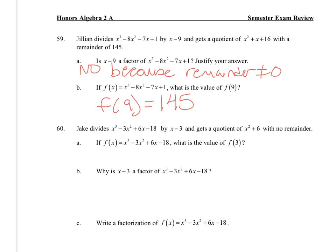Now Jake divides that polynomial by x - 3 and gets no remainder. What is the value of f(3)? That's going to be 0 because the remainder is 0. Why is x - 3 a factor? It's a factor because there is no remainder, or because the remainder equals 0.